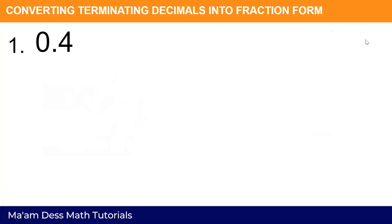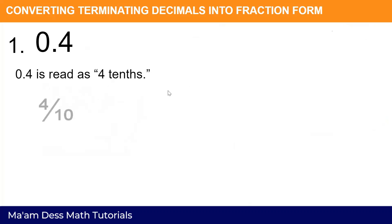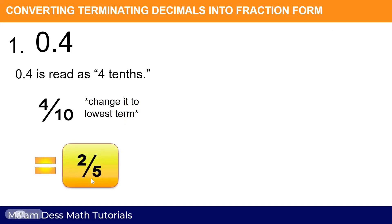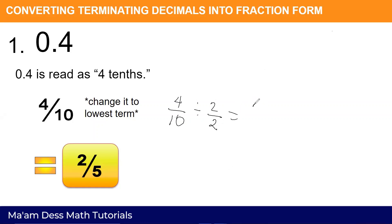First example: 0.4, or four tenths. Write this as four over ten. Change it into lowest term — you will have two fifths. Get the GCF of four and ten, which is two. Divide both by two: four divided by two is two, and ten divided by two is five. So the answer is two fifths.